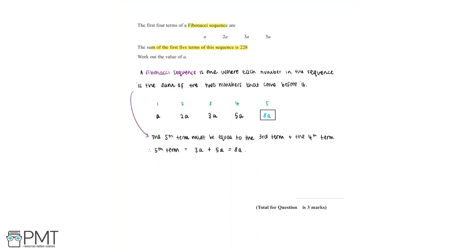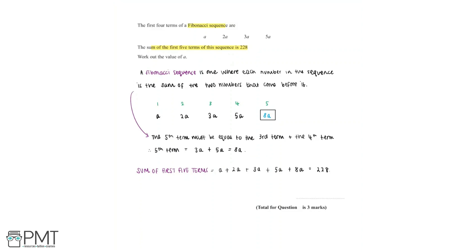We're told that the sum of the first five terms is equal to 228. The sum of the first five terms would be a plus 2a plus 3a plus 5a plus 8a, and this is all equal to 228. We can simplify this because a plus 2a plus 3a plus 5a plus 8a is equivalent to 19a, so 19a is equal to 228.